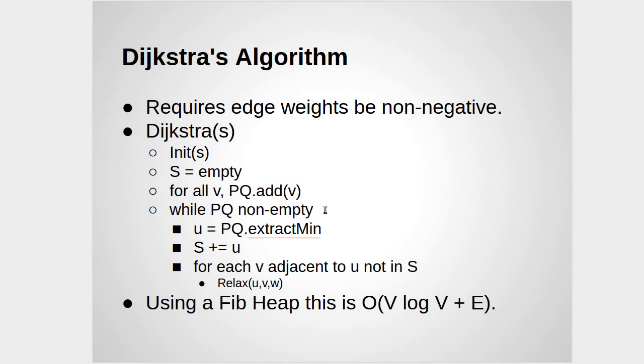And then we have a while loop, and while the priority queue is not empty, we extract the minimum off, we add that vertex to S, and then we run through everything that comes off of U that is not yet in the set S, and we call relax on it.